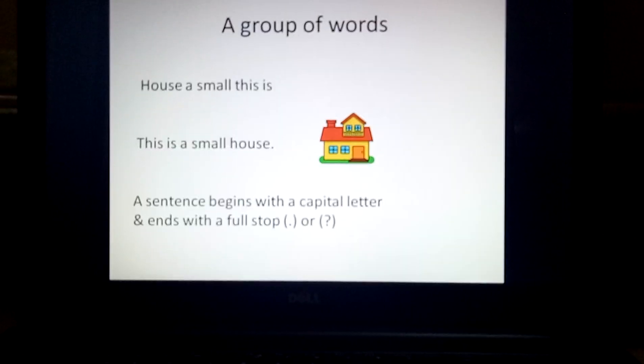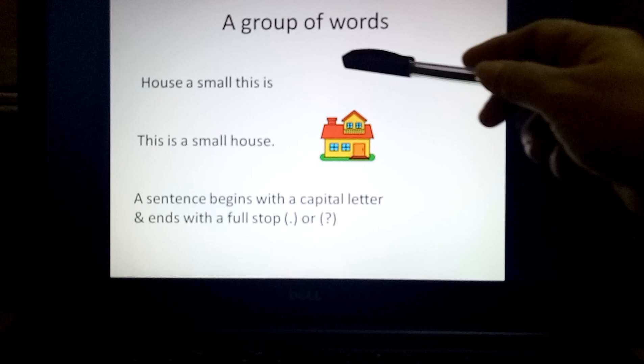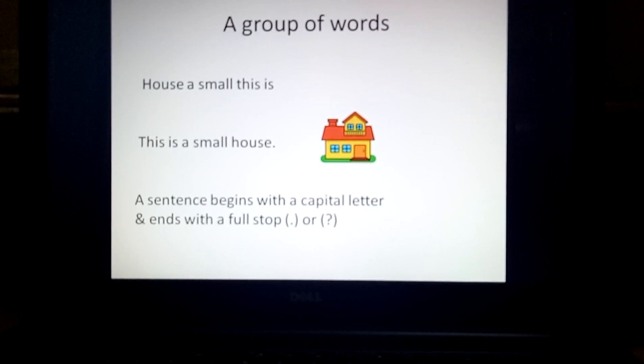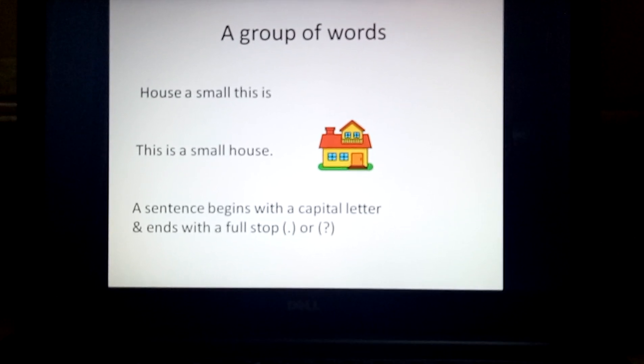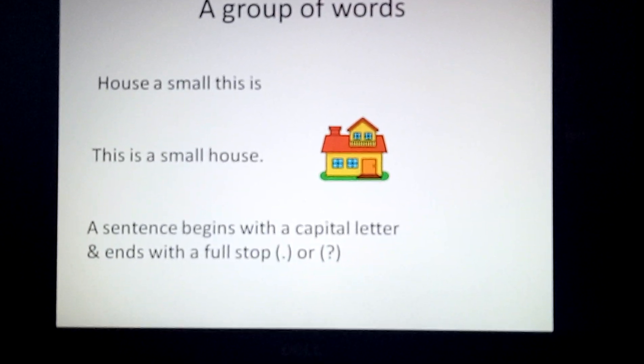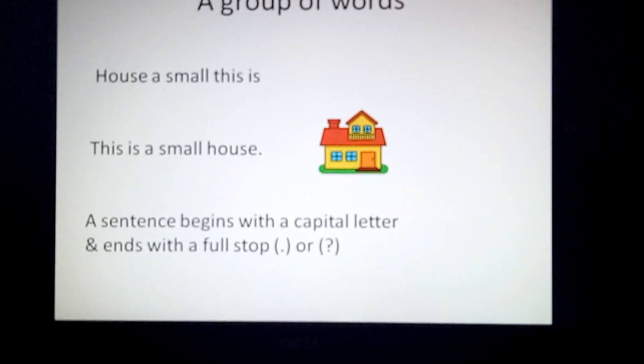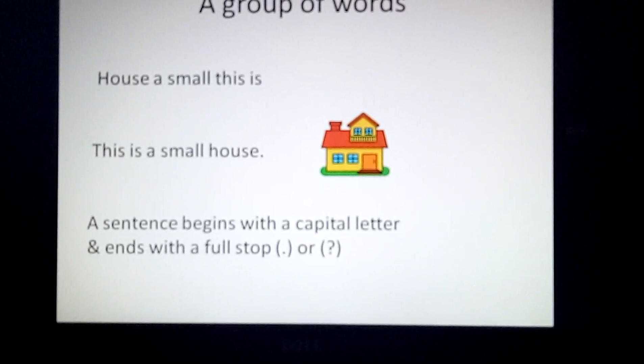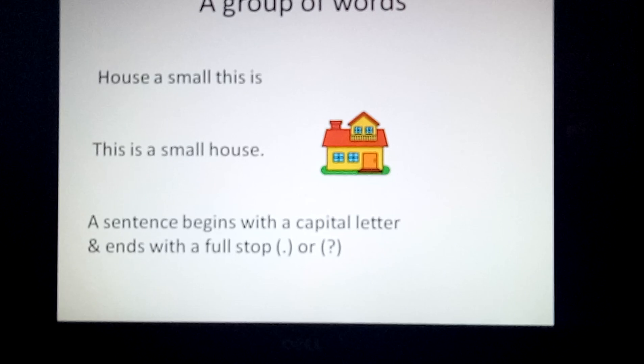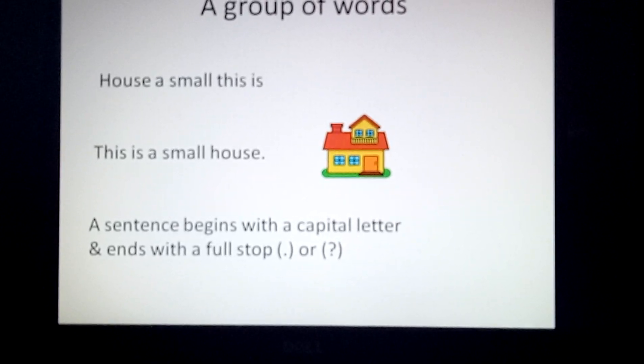A sentence is a group of words. But look at this line. How's a small this is? Do you understand anything from this? No, we do not. Because this is a group of words, but from these words we cannot understand anything. It doesn't have any meaning.